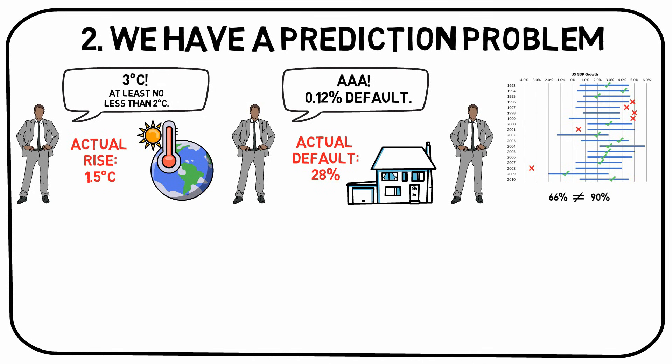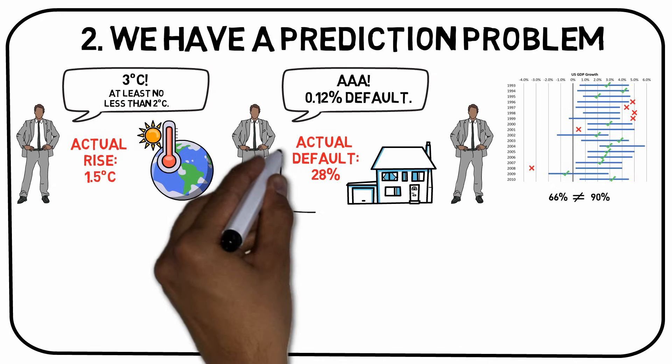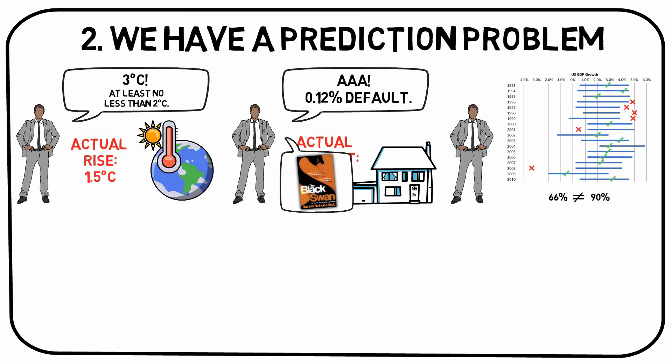Alright, so apparently, at least in some fields, we are terrible at making predictions. And yes, you could blame black swan events for these failed forecasts like the S&P did, but in reality, it's much more likely that the fault is in the model of the forecaster than in the world itself. We should show some sympathy though, because there are situations in which predictions are extra difficult to make.